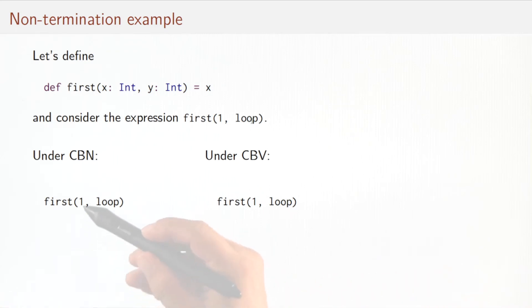Under call-by-name, what will happen? Well, call-by-name will reduce the first expression without reducing the arguments. So it would just yield one in a single step, the first argument, and the evaluation would stop in a value, obviously.